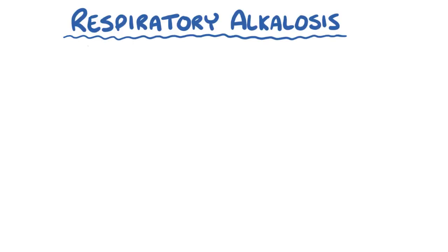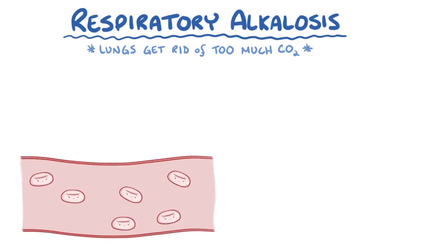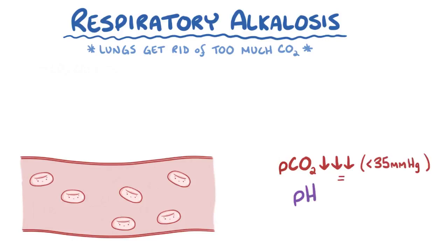In all of these situations, the result is that the lungs get rid of too much carbon dioxide. The carbon dioxide gets depleted from the blood, so the partial pressure of carbon dioxide falls, usually below 35 mmHg. This causes an increase in blood pH, often raising it above 7.45.